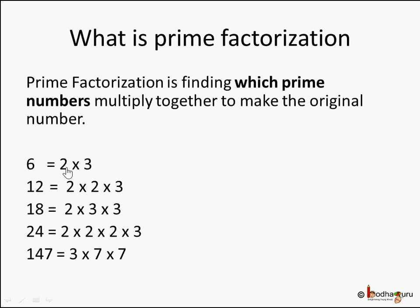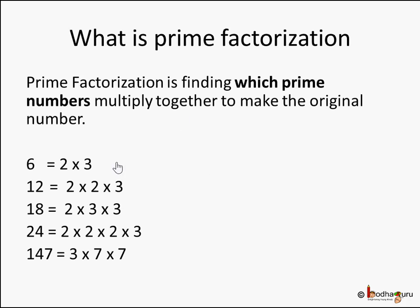For example, 6 is nothing but 2 into 3. 2 is a prime number, 3 is a prime number, so 2 into 3 is 6. 12 is nothing but 2 into 2 into 3. And 147 is nothing but 3 into 7 into 7. This is the prime factorization method which we may have learned in class 7 — finding a given number as a product of prime numbers.